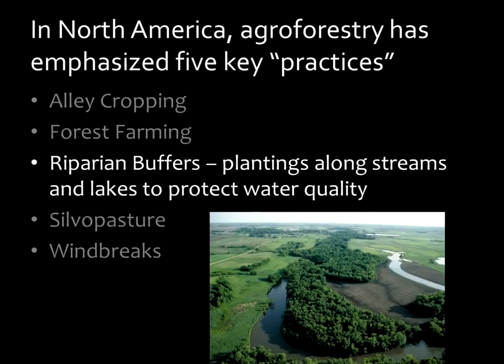A popular practice in much of the U.S. is called the riparian buffer. A riparian zone is a water zone connected to water, and these plantings are designed to protect those water resources. They protect streams and lakes and help to capture sediment coming from the fields, or they can capture nutrients and fertilizers that would otherwise go into the water, or other types of contaminants. So they're keeping the water cleaner and healthier — improving water quality overall. That's the primary purpose.